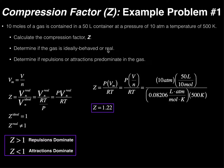Now we can answer whether repulsions or attractions predominate. If Z is greater than 1, repulsions dominate; if Z is less than 1, attractions dominate. Our Z is 1.22, which is greater than 1, so repulsions dominate in this gas. That doesn't mean there are no attractions — there are — but repulsions play more of a role than attractions.